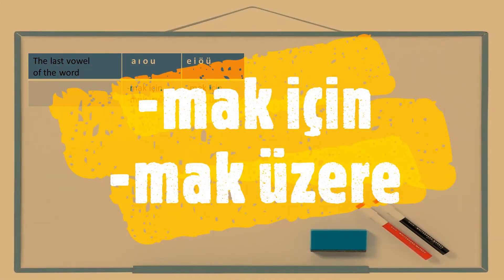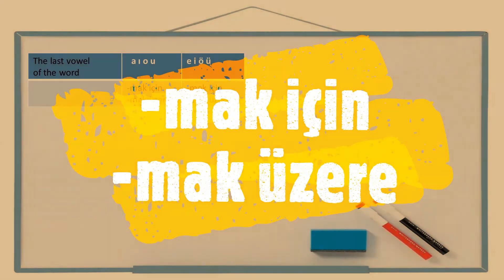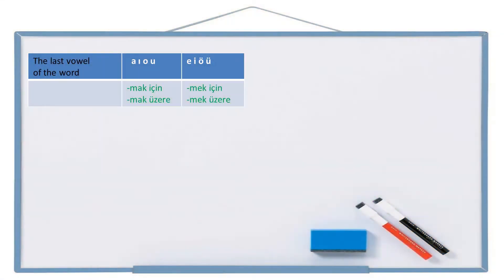Hello friends. Merhaba arkadaşlar. In this lesson, we are going to learn the suffixes mak için and mak üzere. These suffixes alternate according to two-way vowel harmony as mak için, mek için, and mak üzere, mek üzere.